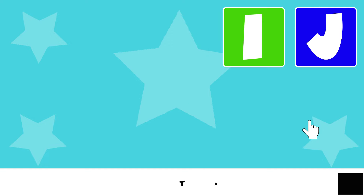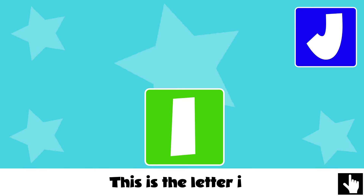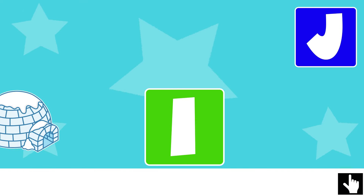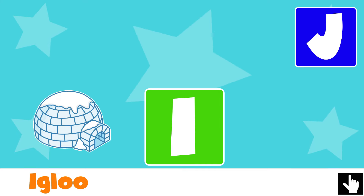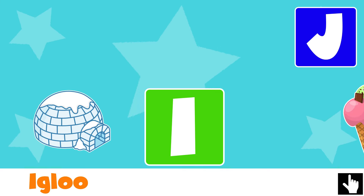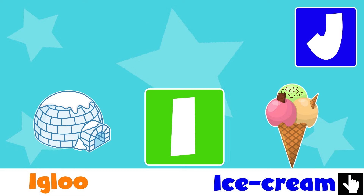I — this is the letter I. I is for igloo, ee ee igloo. I is for ice cream, i i i.